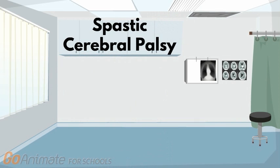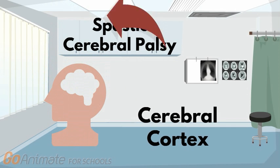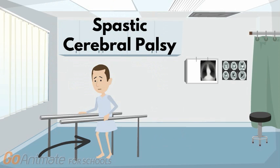For example, spastic cerebral palsy is the result of damage to the cerebral cortex, the biggest area in the brain. It leads to the production of stiff muscles, which are often called spastic muscles. This type is the most common form of CP.